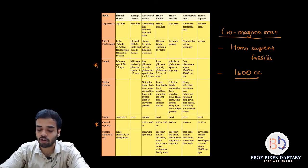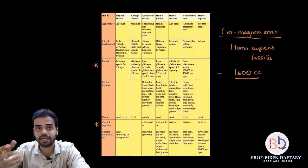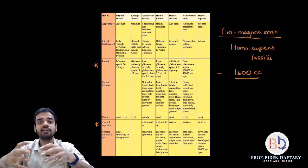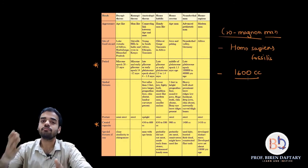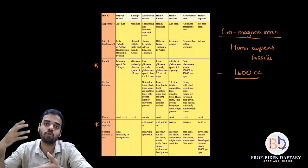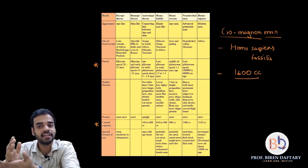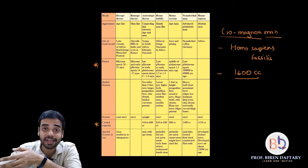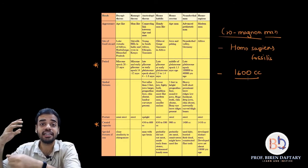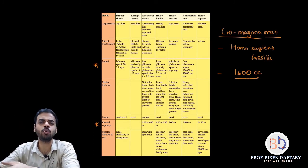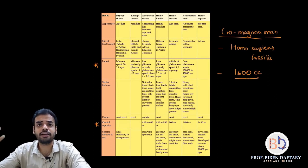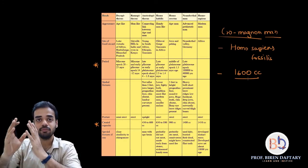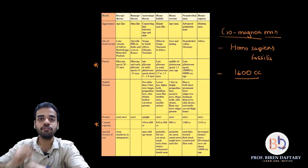Cro-Magnon man had the largest cranial capacity at 1600 cubic centimeters — even larger than ours. One reason was they ate a lot of raw meat, requiring stronger skulls and thus larger brain cavities, though a bigger brain doesn't necessarily mean more intelligence. They followed customs and traditions, painted inside caves, and had very sharp, advanced tools better than those of Neanderthal man.